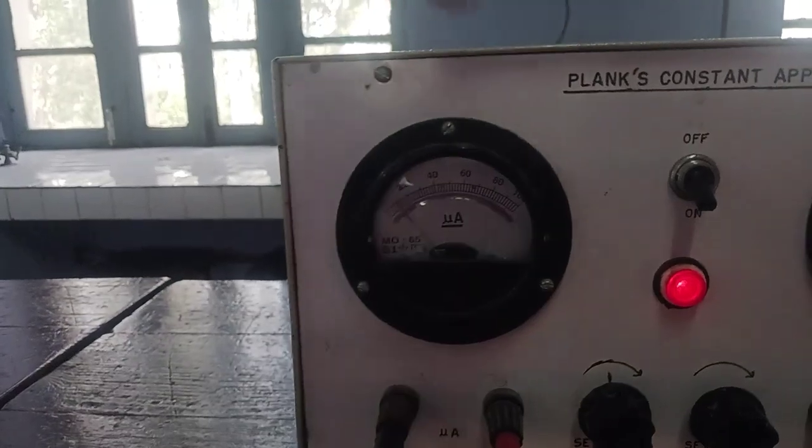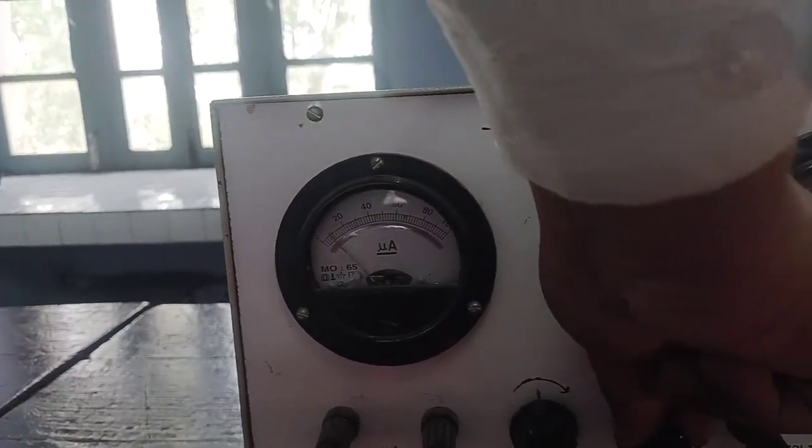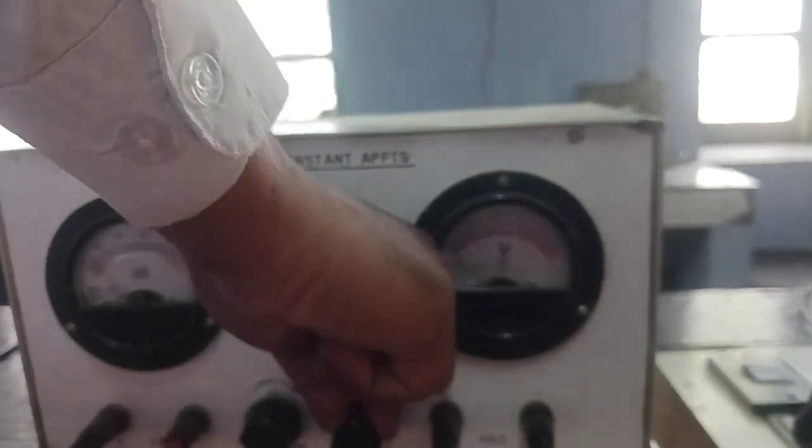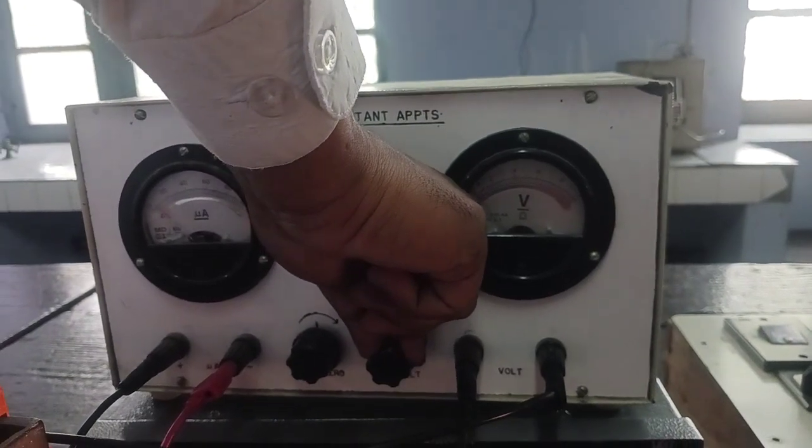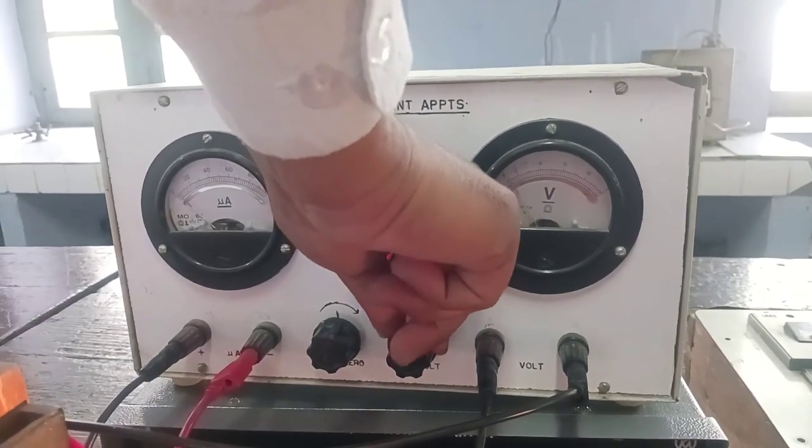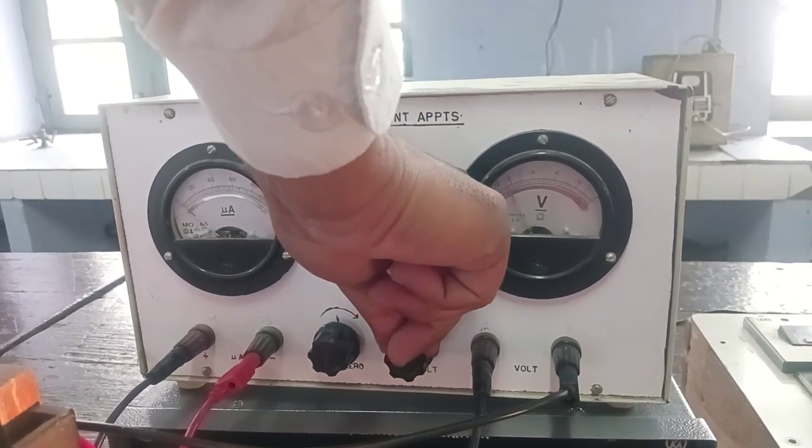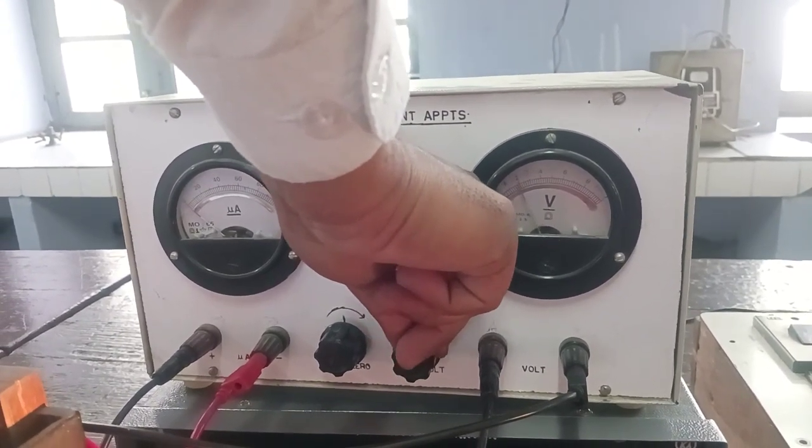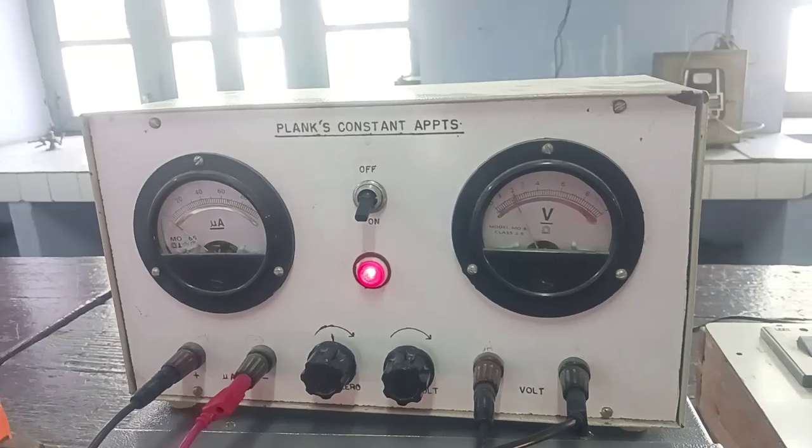Then when we increase the deaccelerating voltage, the current starts to decrease. At the voltage where the current becomes zero, that voltage is known as the stopping voltage.